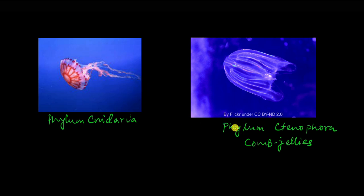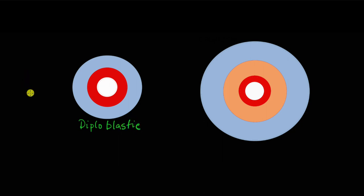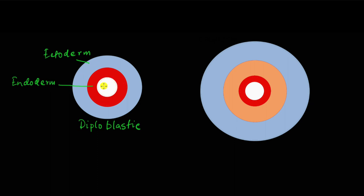These animals' cells are organized into tissues, and they had two layers of tissues when they were embryos. This is called diploblastic — diplo means two. The outer tissue layer is called the ectoderm (ecto means outer) and the inner layer is the endoderm (endo means inner). The innermost space is the gut — the digestive tract of the animal. Phyla Cnidaria and Ctenophora are diploblastic. In many textbooks you'll find mention of mesoglia in diploblastic animals — but that is formed by cell secretions and is not itself a cellular tissue layer.